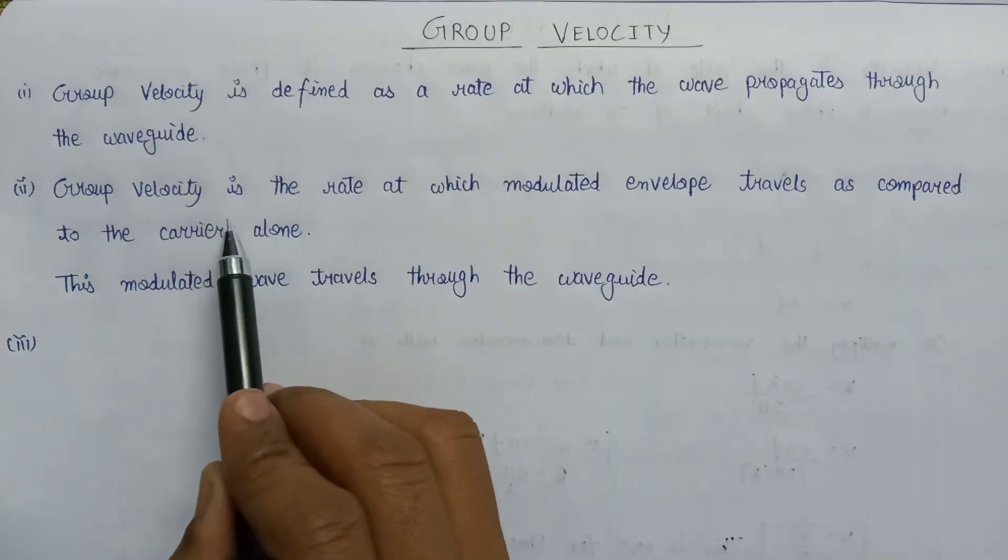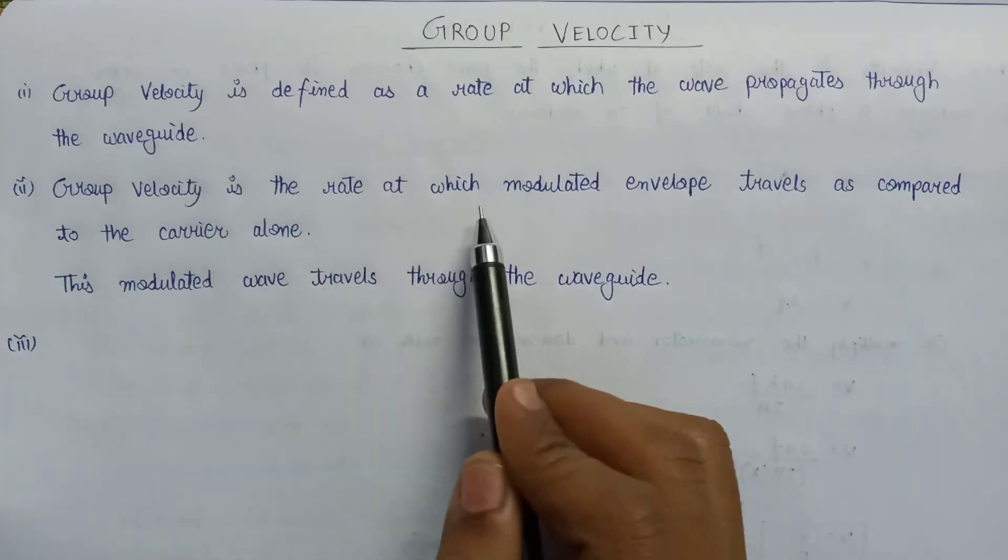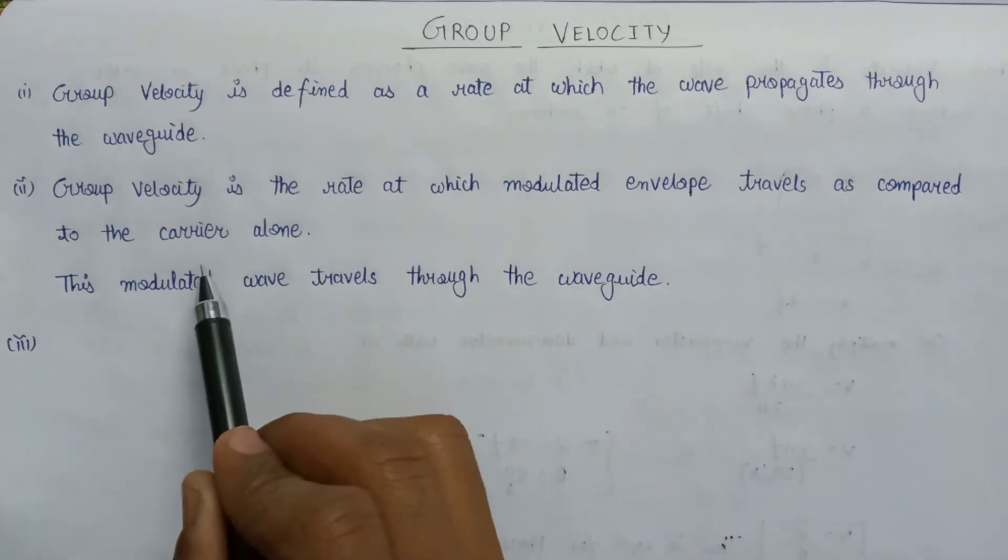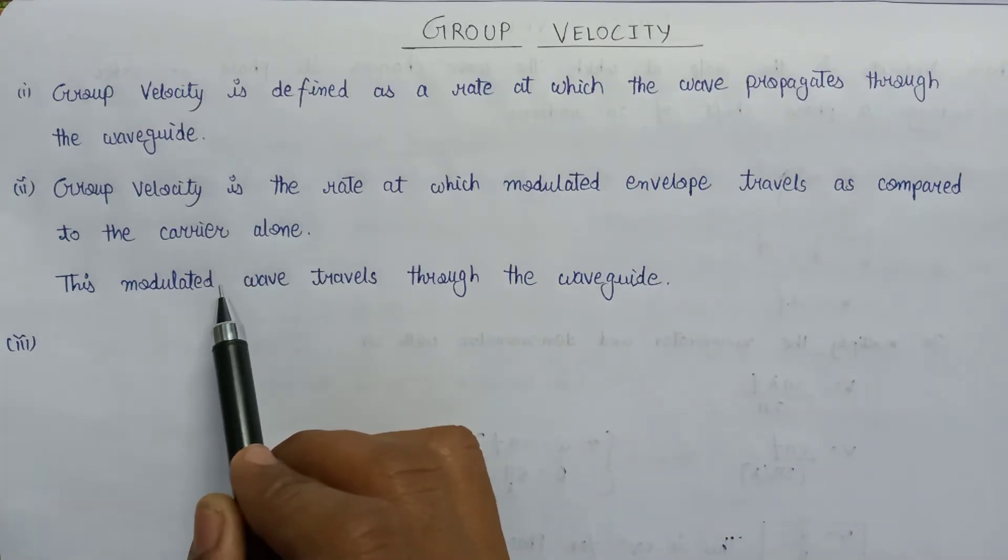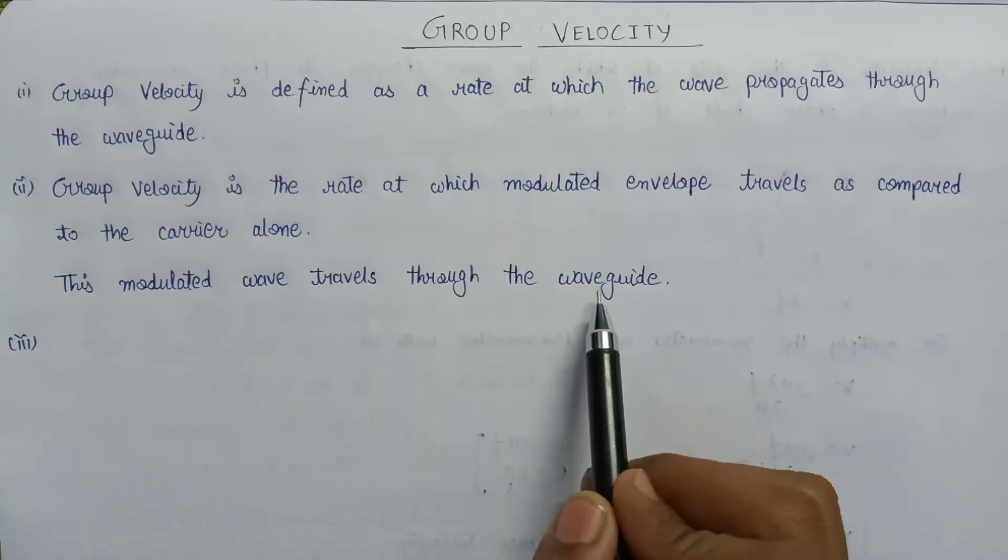Group velocity is also determined as the rate at which the modulated envelope travels as compared to the carrier alone. The modulated wave then travels through the waveguide.